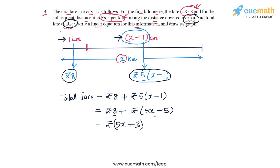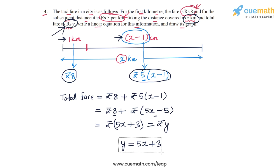We know that the total fare is represented as rupees y, so this must equal y. From here we get the equation y equals 5x plus 3. This is the two-variable linear equation that relates x and y, completing the part where we had to write a linear equation for this information.